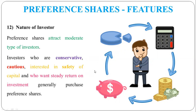So, preference shares are suitable for investors who want a steady return. They need a fixed return — they want to get that fixed amount every year. People who are conservative, cautious, and believe in safety and steady returns invest in preference shares. Because with preference shares, every year you get a fixed amount in the form of dividend, and your capital is also returned to you. That is why conservative investors choose to invest in preference shares.